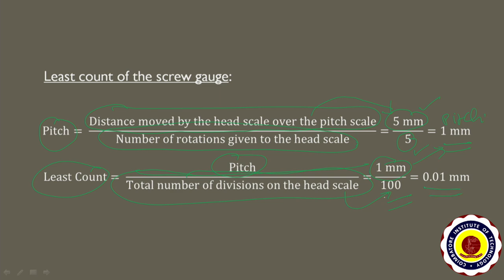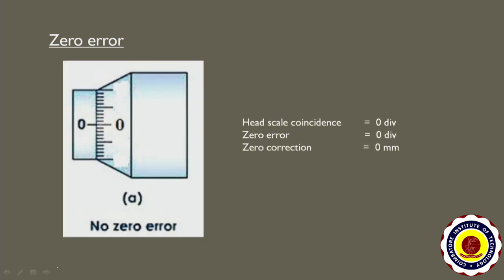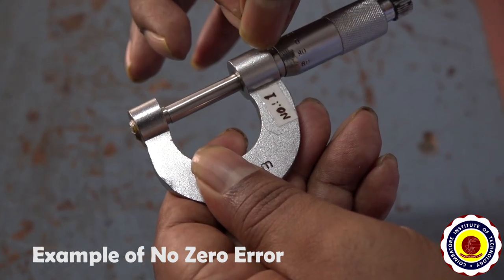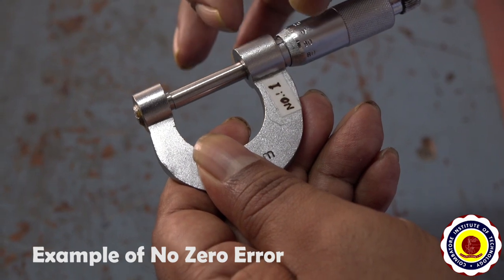Now let us see what is meant by zero error. The least count of this screw gauge is 0.01 mm. When there is no zero error, the zero of the pitch scale reference line coincides with the zero of the head scale. In this case, the head scale coincidence equals 0 division, zero error equals 0 division, and zero correction equals 0 mm.